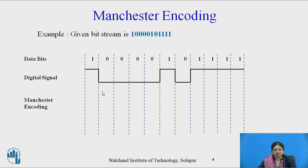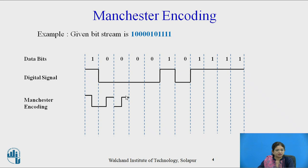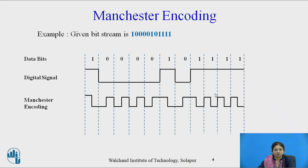Now let us draw Manchester encoding. One is represented as high-to-low signal, whereas zero is represented as low-to-high signal. The first bit is one, that is high-to-low. The next bit is zero, that is low-to-high. The following zeros continue as low-to-high, connected in a continuous manner. Then one is high-to-low, zero is low-to-high, and the remaining four ones are drawn as high-to-low in this manner. This is Manchester encoding.